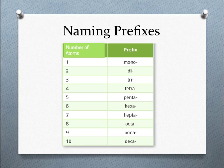Here are the Greek prefixes used to indicate the number of atoms in a covalent compound. One is mono, as in a monologue where one person talks.